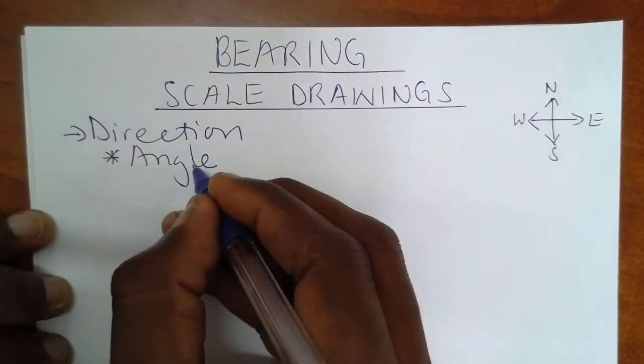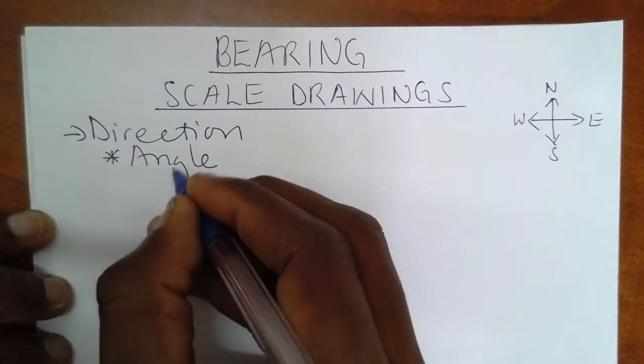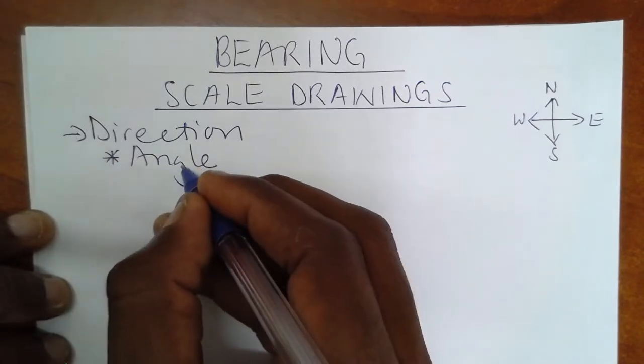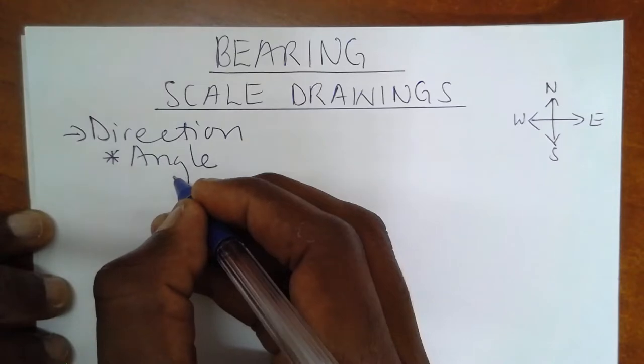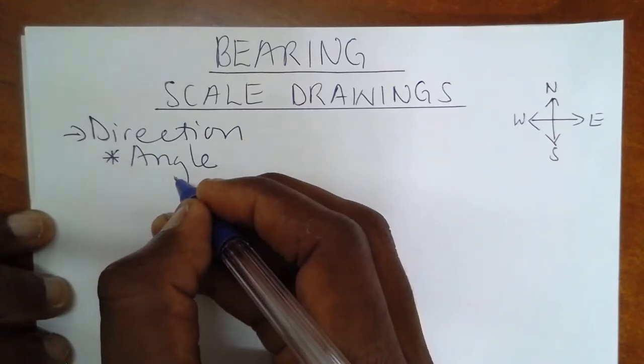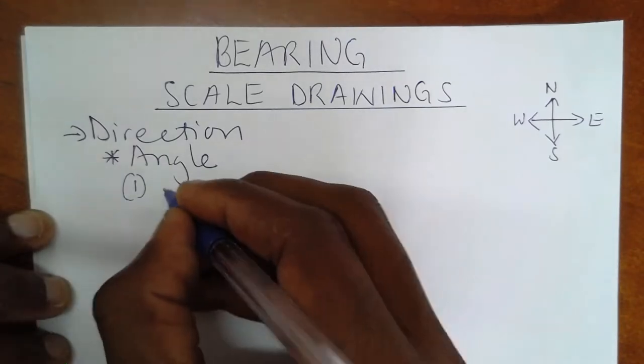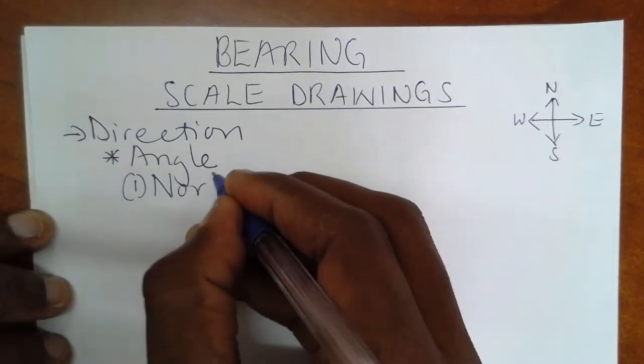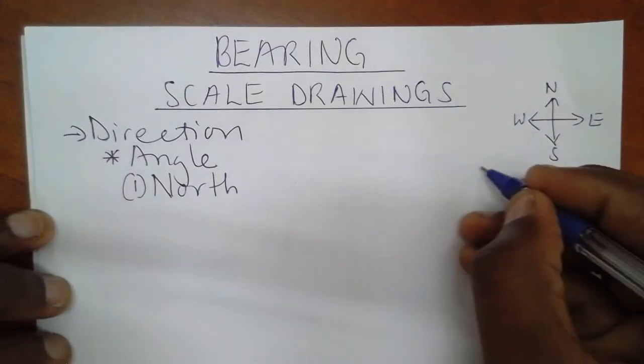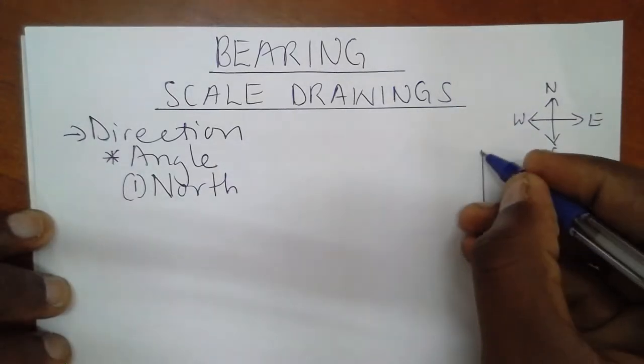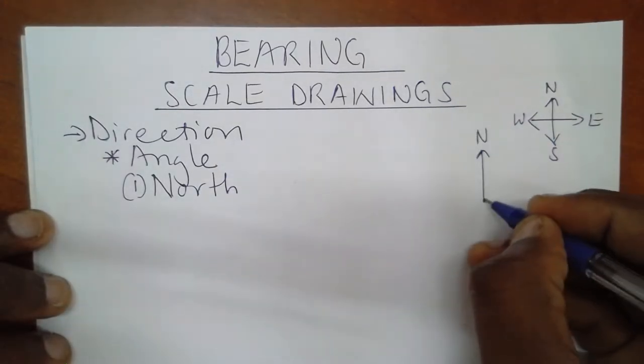But this angle which we are using to represent direction must pass under the following condition. Number one, this angle must start from the north. And as you know, north is always like up if you're having a book.